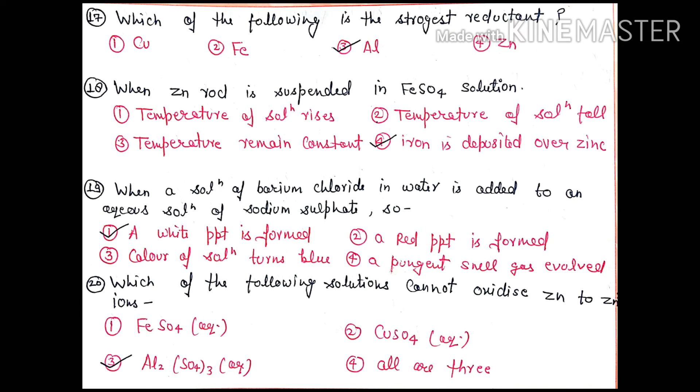Question 18: When zinc rod is suspended in ferrous sulfate solution, a redox reaction occurs and iron deposits on zinc. So option 4 is correct.